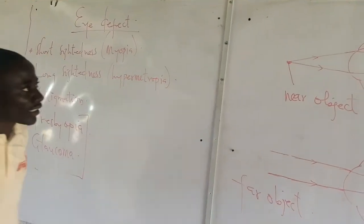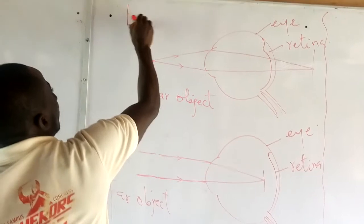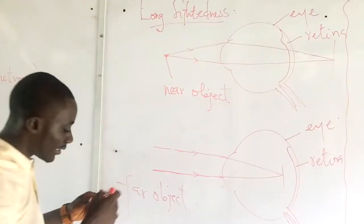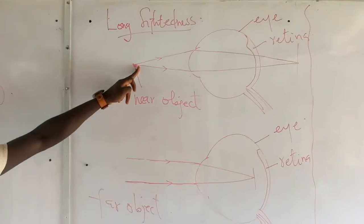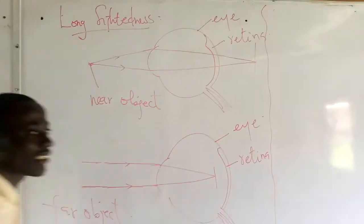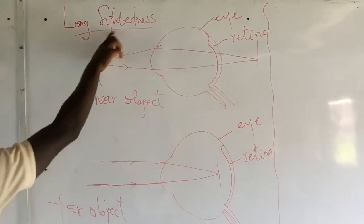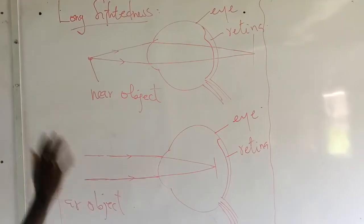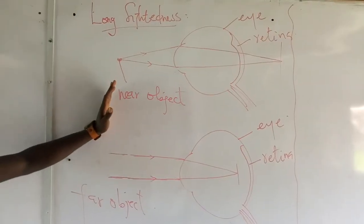With the first diagram, that condition is called long-sightedness. When we say long-sightedness, it means that the eye can only see far objects. So when the object is near, the person cannot see — because the light rays are meeting at the back of the retina rather than on it. That is why we call it long-sightedness: the person can only see objects that are long, meaning far away. A person suffering from long-sightedness, when an object is brought very near to the eye, cannot see it.